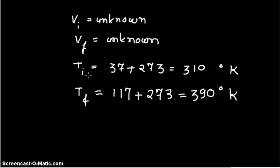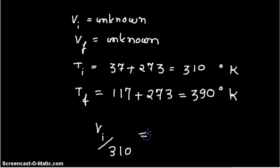The initial temperature is converted into Kelvin and the final temperature is also converted into Kelvin. Substituting the values: V1 divided by 310 is equal to V2 divided by 390.